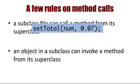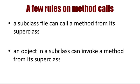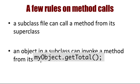An object can invoke any public method from its superclass. Yes, that is similar to the first rule, but here I am referring to a call that would be found in a client file. My object is an object instantiated from the subclass and the method getTotal is a public method inherited from its superclass. It must be public as opposed to private or protected because this call is being made from outside the class file.